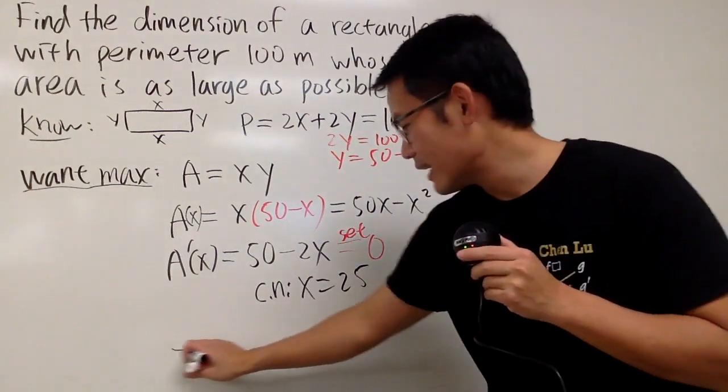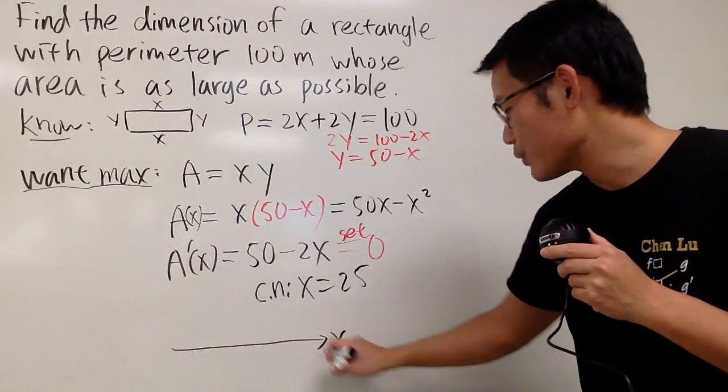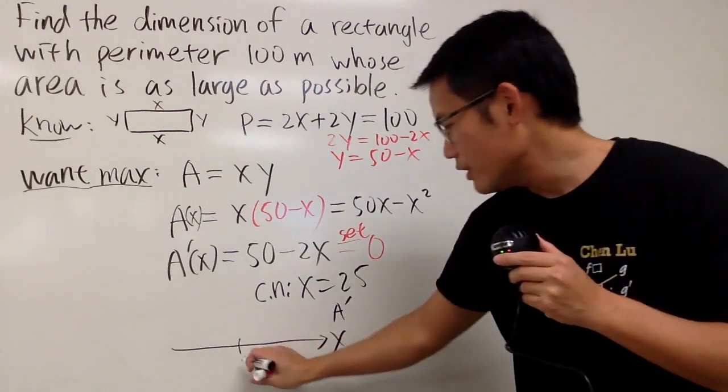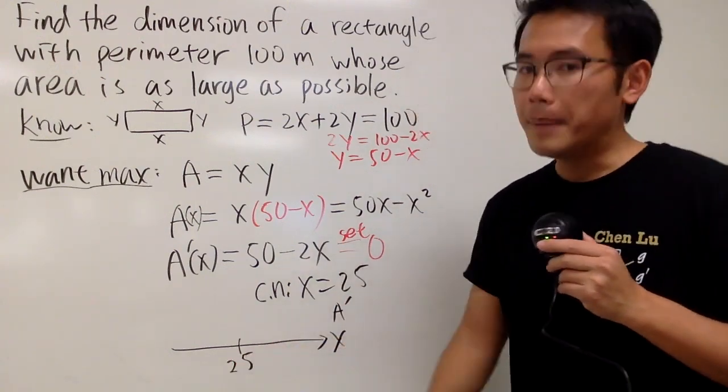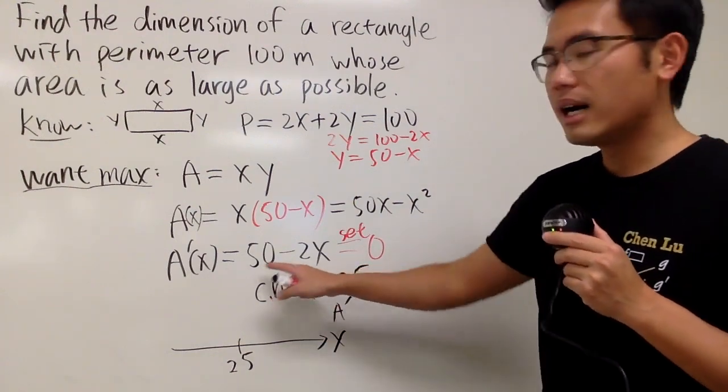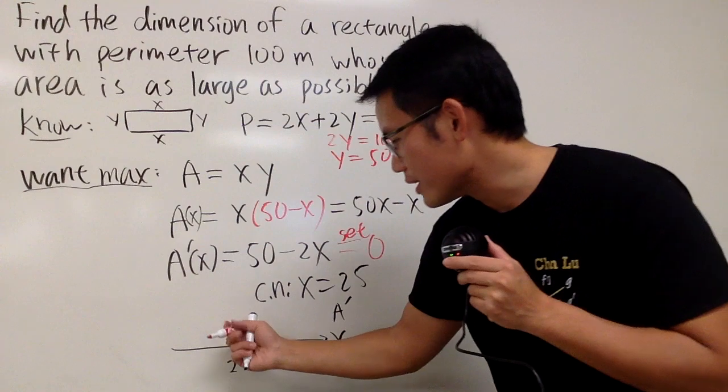And that's very nice. Have a look. When we have the x value here, and this is the A prime, 25, right here. Pick a number less than 25, let's say 10. Put it here, you get a positive, right? So this right here is positive.